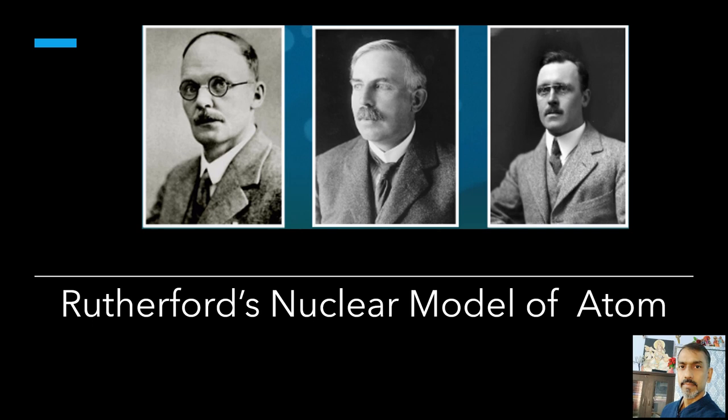The details are discussed in the next section. The explanation of the results led to the birth of Rutherford's planetary model of atom, also called the nuclear model of the atom. According to this, the entire positive charge and most of the mass of the atom is concentrated in a small volume called the nucleus, with electrons revolving around the nucleus just as planets revolve around the sun.